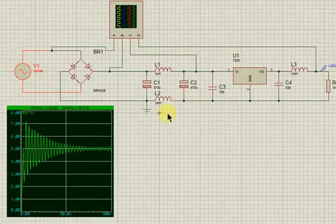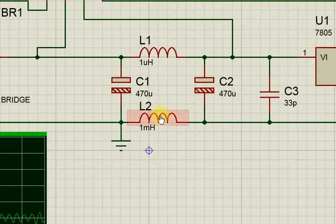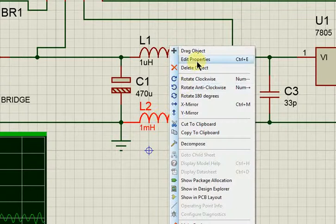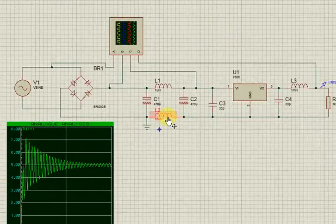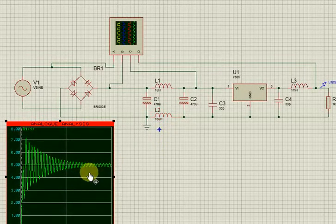I think I have to change this inductor value. This is one millihenry. Let me change the value from one millihenry to 10 microhenry, because EMI and EMC is black magic, so we have to do some hit and trial methods. This is my first method.